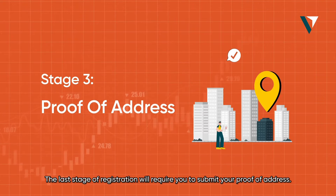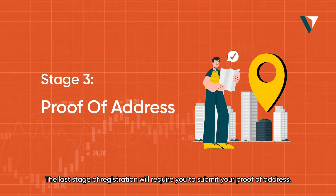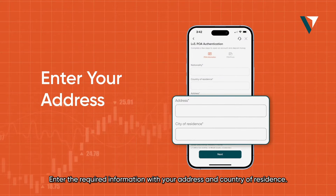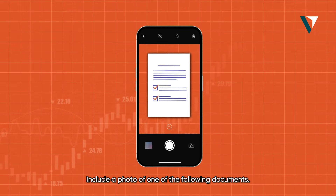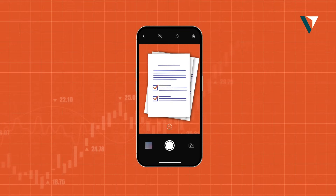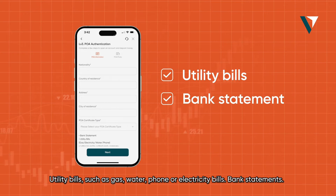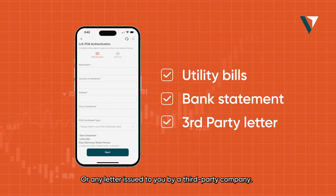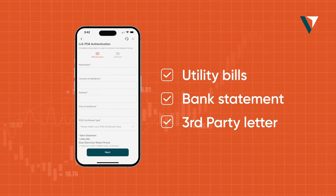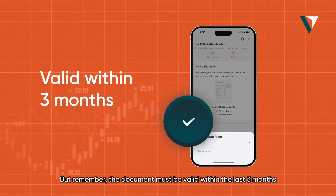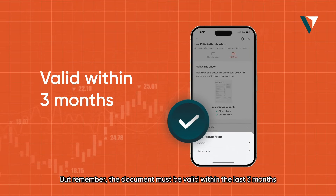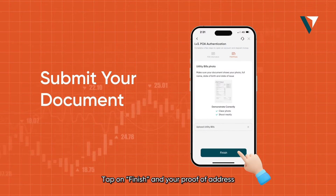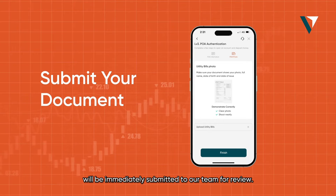The last stage of registration will require you to submit your proof of address. Enter the required information with your address and country of residence. Include a photo of one of the following documents: utility bills such as gas, water, phone, or electricity bills, bank statements, or any letter issued to you by a third-party company. The document must be valid within the last three months with the information clearly displayed. Tap finish and your proof of address will be immediately submitted to our team for review.